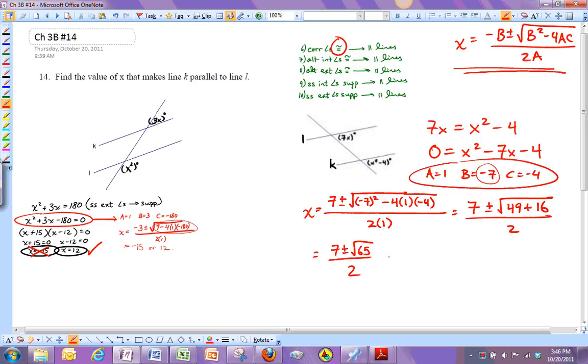And so this is where I turn it into two things. One is 7 plus root 65 over 2. And one is 7 minus root 65 over 2.